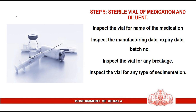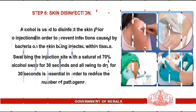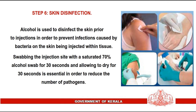Step 5: Sterile vial of medication and diluent. Inspect the vial for the name of the medication, manufacturing date, expiry date, and batch number. Also inspect the vial for any breakage and for any type of sedimentation.